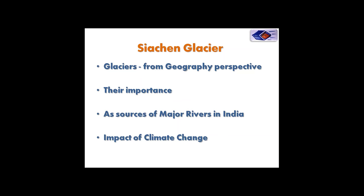In India, many glaciers are found in the Himalayan region, mostly in the states of Jammu and Kashmir, Himachal Pradesh, and Uttarakhand, with a few in Sikkim as well. Their importance for India is significant because many of the major Himalayan rivers originate in these glaciers.